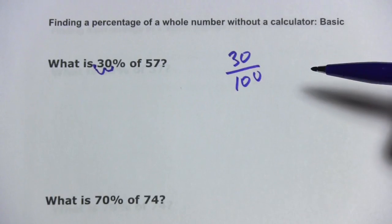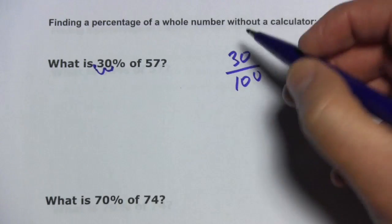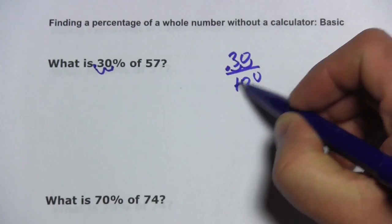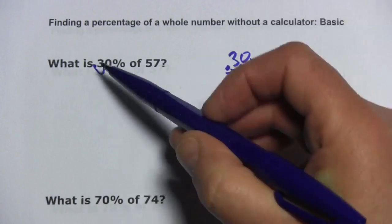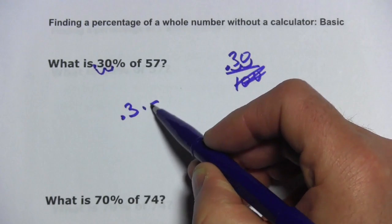That's what percent means. It means out of 100. And so it's 30 divided by 100, and that's going to be 0.3. The shortcut is to think of it as moving your decimal point two places. So this problem is really 0.3 times 57.